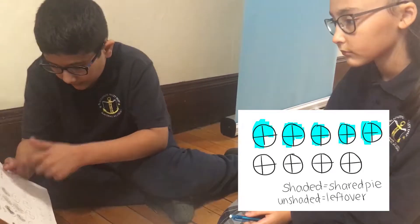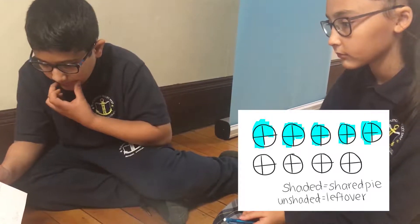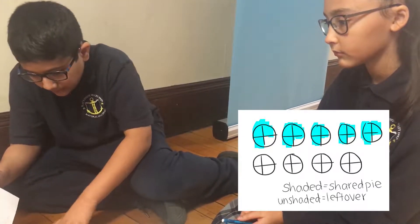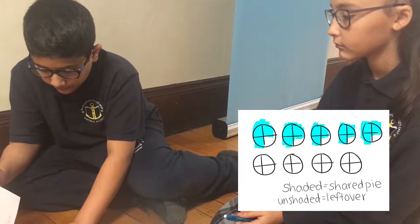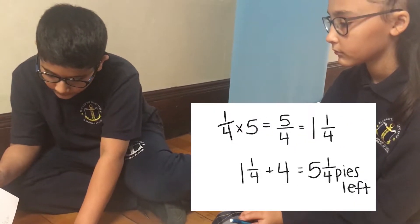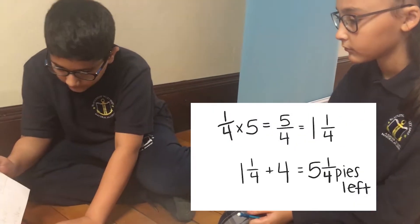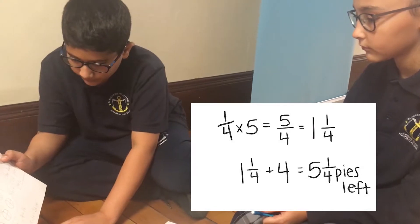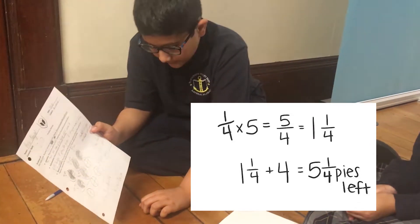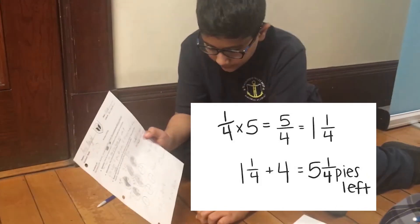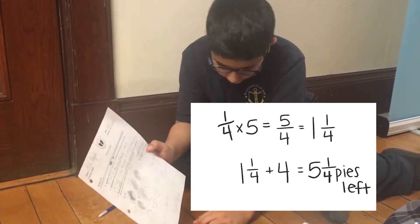I gave it to his friends and the non-shaded pieces were left over. So I did one-fourth times five because there was one-fourth left of each pie. That got me to five-fourths, which is equal to one and one-fourths.